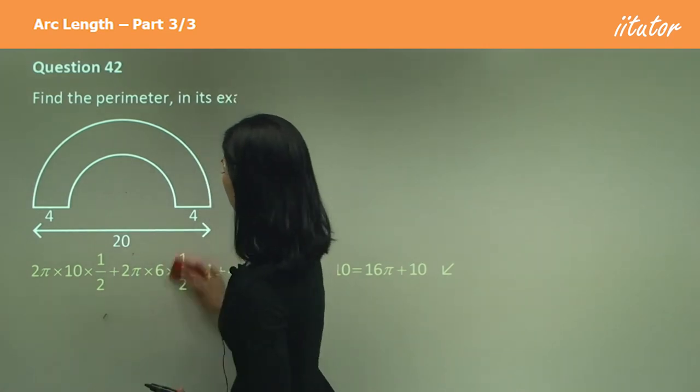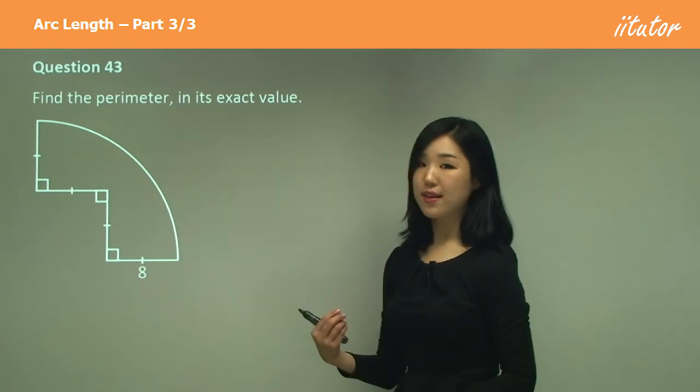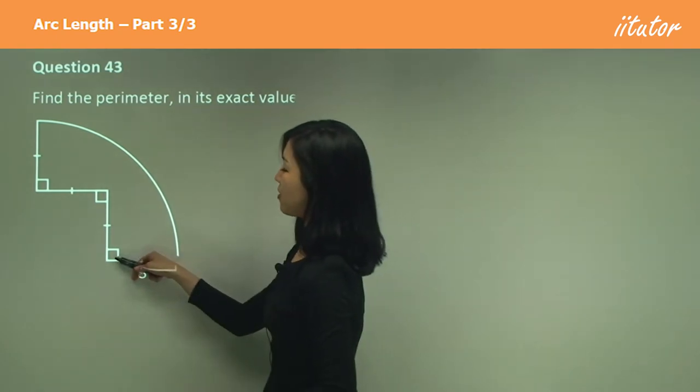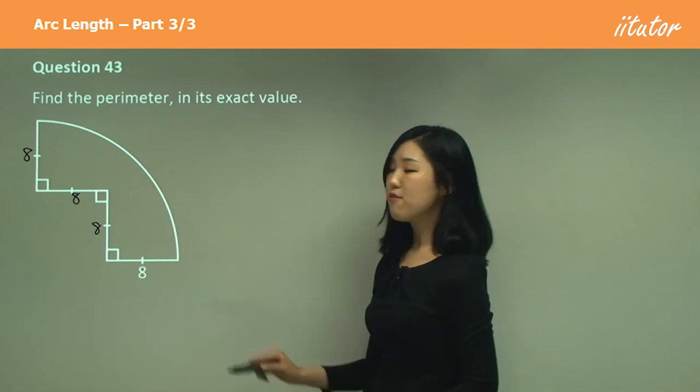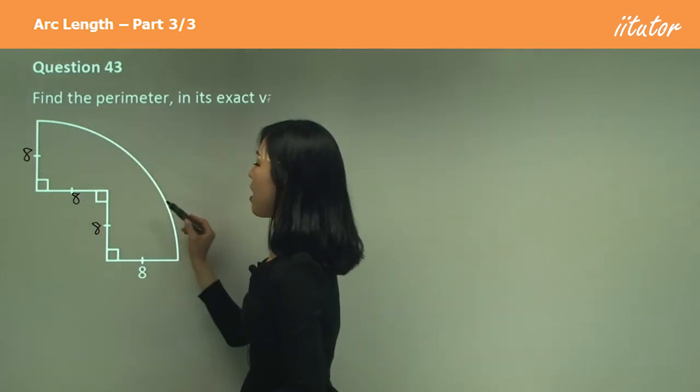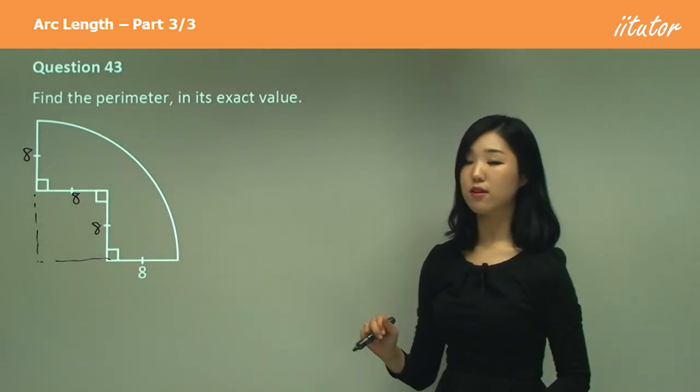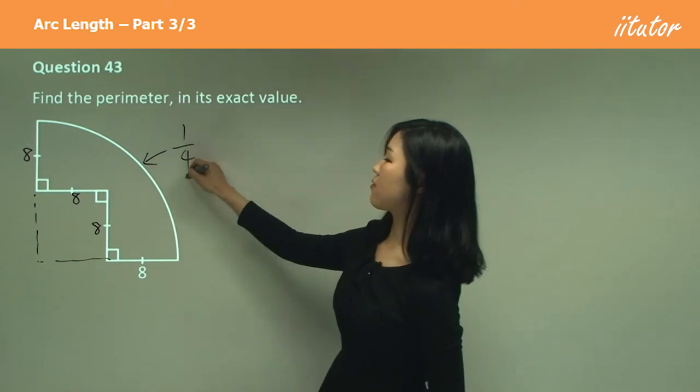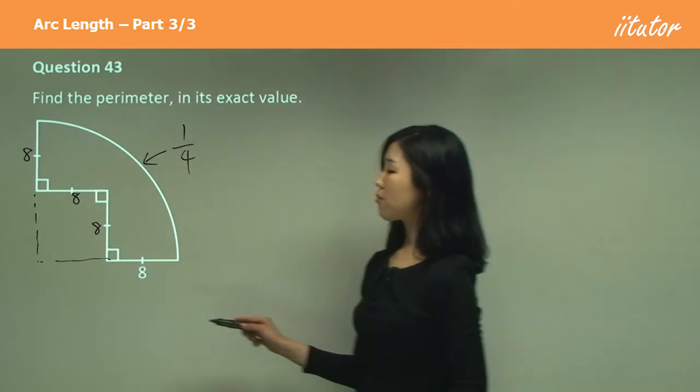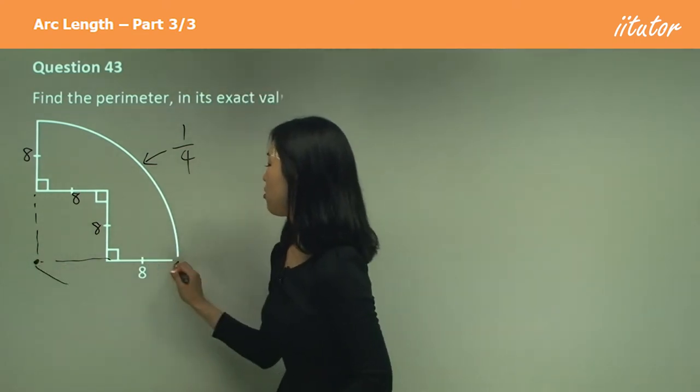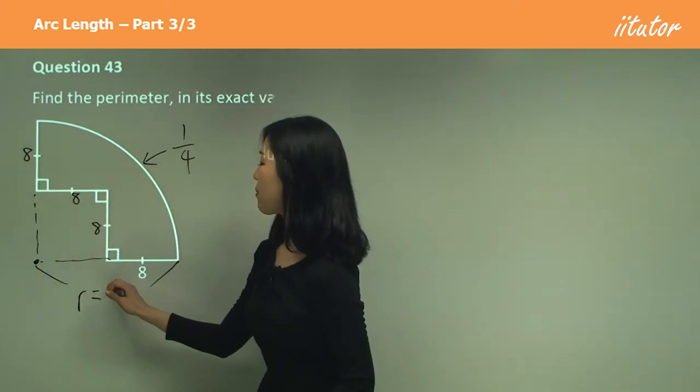Find the perimeter in exact form. So they give you this as 8, so this must be 8, 8, and 8, right? They're all 8. But we don't have the arc, and you can see if I kind of like make that, that's actually a quarter of a circle, isn't it? This arc is a quarter, that's the fraction of the circumference that we want. What's the radius? The radius must be from the center to the center to the edge, so if this is 8, this is also 8. The radius is 8 plus 8, which is 16.